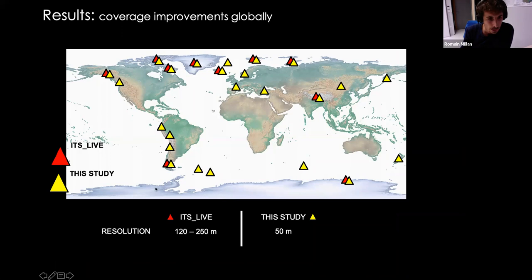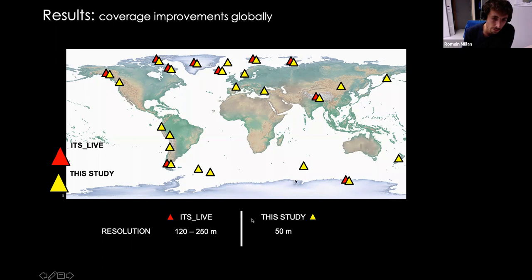This slide shows a comparison of the ITS_LIVE coverage in red and the coverage from our study in yellow. We covered all the small Andean glaciers in South America, in Europe, in New Zealand, and also all the sub-Antarctic islands. The ice velocity maps we provide are at a sampling resolution of 50 meters — two to three times better than what was done before — which can have a great influence when looking at small-scale features in ice velocity.